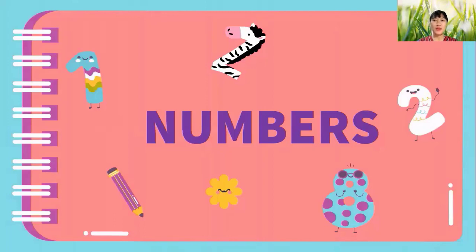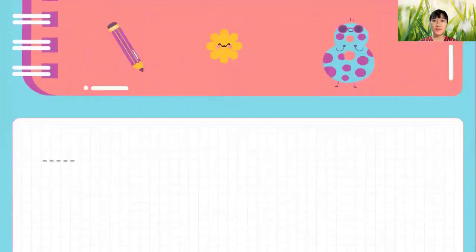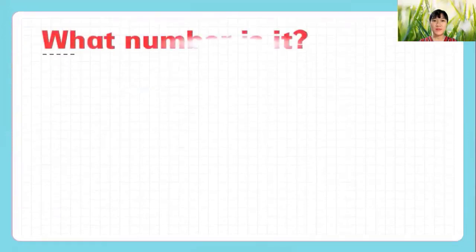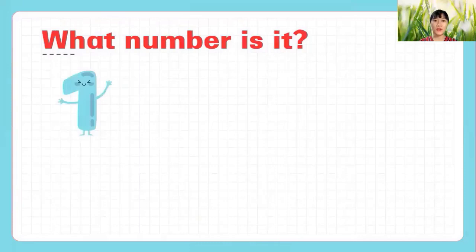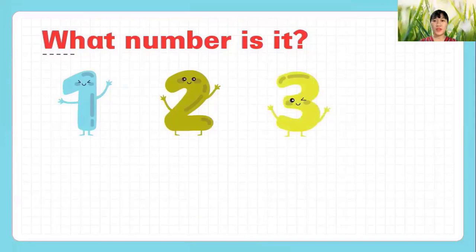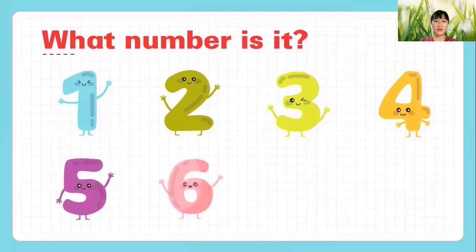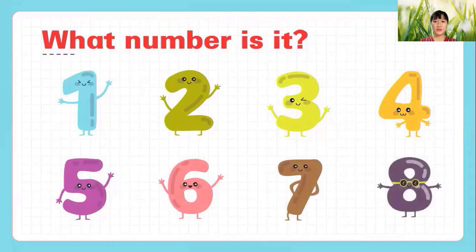Number. So now, let's have a look at numbers. What number is it? One. One. Two. Two. Three. Three. Four. Four. Five. Five. Six. Six. Seven. Seven. Eight. Eight.